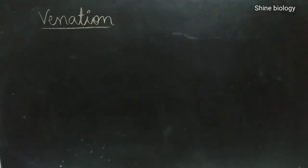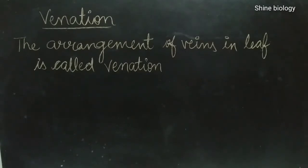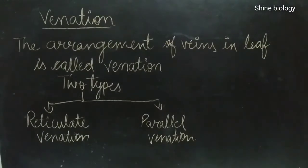Next is venation in leaves. Venation is the arrangement of veins in a leaf. Every leaf has a different kind of vein arrangement. There are mainly two types of vein arrangement commonly seen in leaves: reticulate venation and parallel venation.